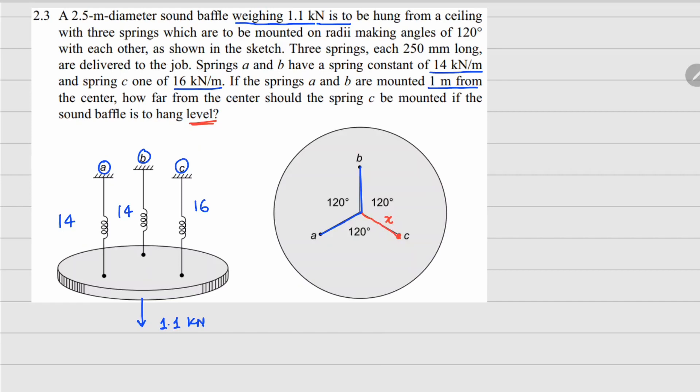Because of the weight, all of these springs will be extended, so there are forces in the springs. Let's call this ka times delta, kb times delta, and kc times delta. I am taking delta to be the same because we are assuming that this is going to remain level.